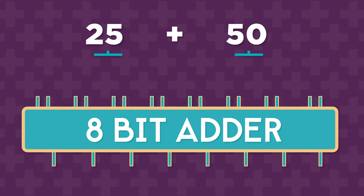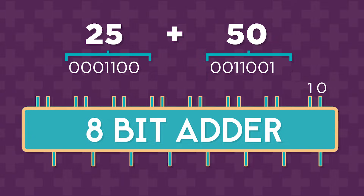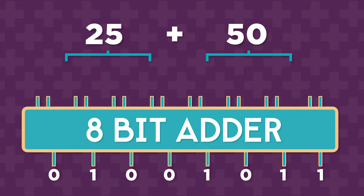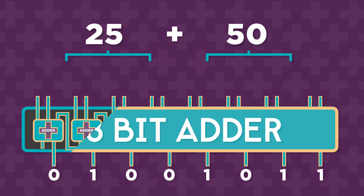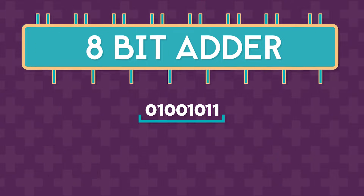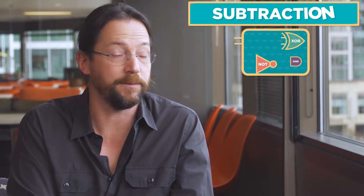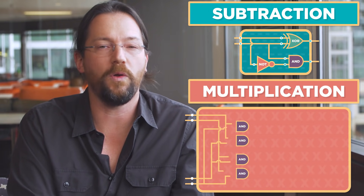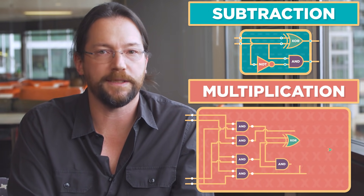Each number is represented using 8 bits, resulting in 16 different electrical signals that go into the circuit. The circuit for an 8-bit adder has lots of little adders inside of it, which together calculate the sum. Different electrical circuits can perform other simple calculations like subtraction or multiplication.